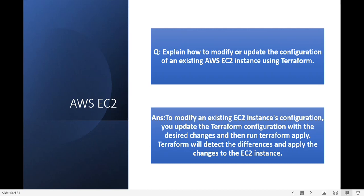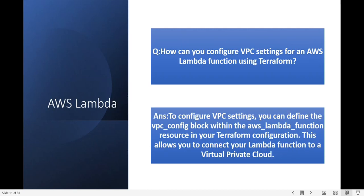Next question: how can you configure the VPC settings for an AWS Lambda function using Terraform? You can configure VPC settings by using the vpc_config block within the AWS Lambda function resource. This allows the Lambda function to be associated with your VPC and run on top of your virtual private network.